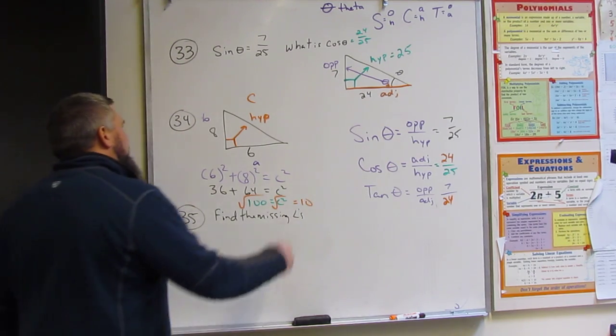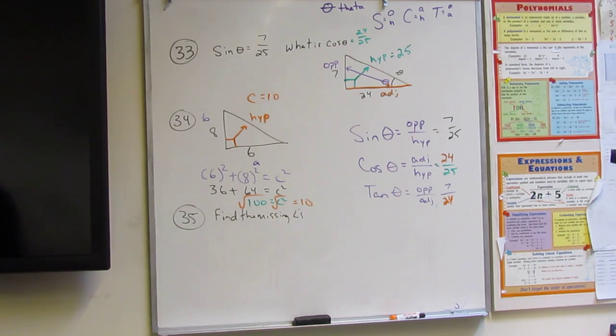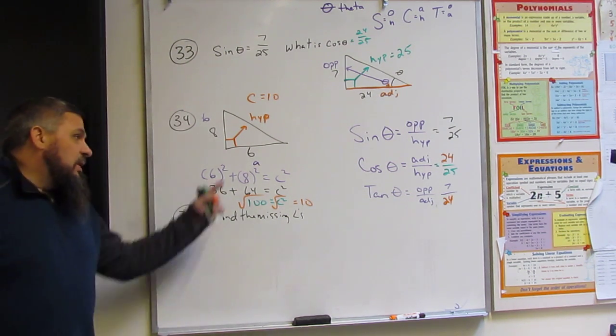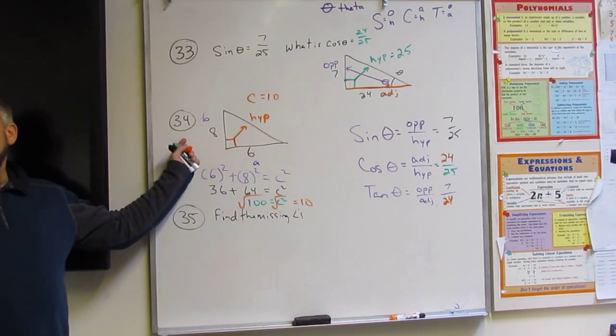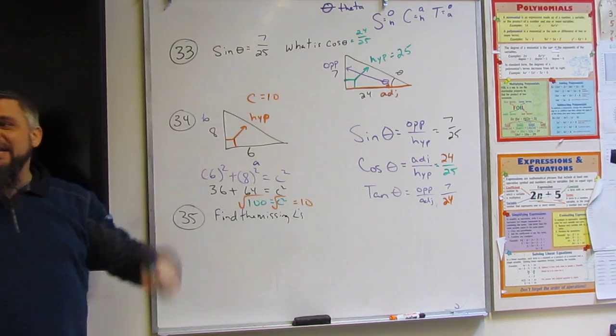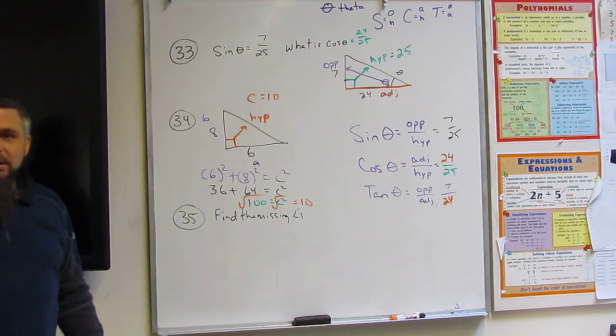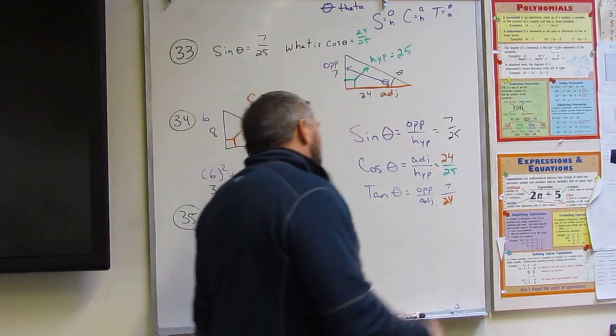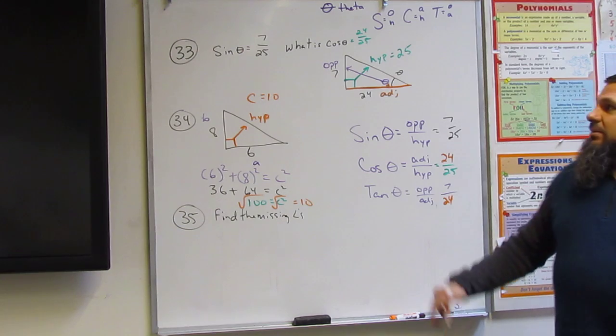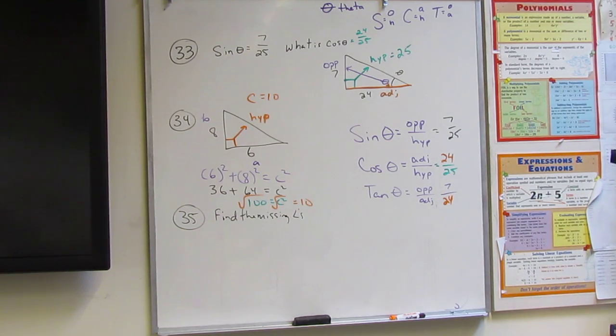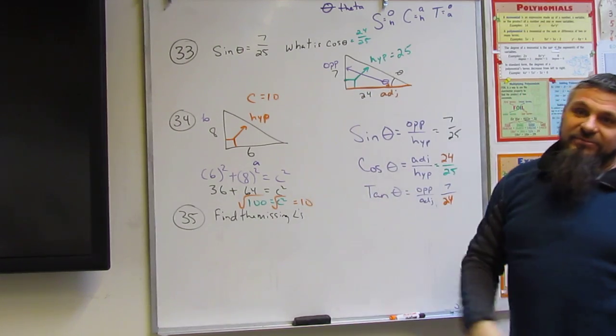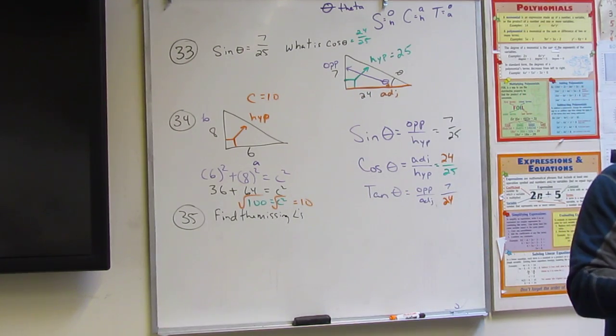Yeah, because this is a Pythagorean triple, people. Think about it. 3, 4, 5 triangle. Except 3 times 2 is 6, 4 times 2 is 8, and 5 times 2 is 10. So we've got to remember our Pythagorean triples. They're up here if you need them. 3, 4, 5, 5, 12, 13, 7, 24, 25, and 8, 15, 17. Oh look, 7, 24, 25.